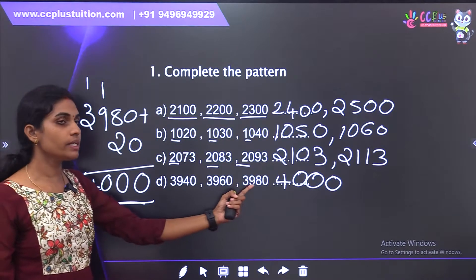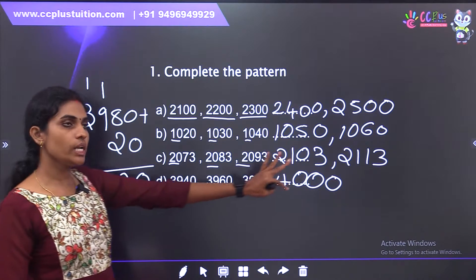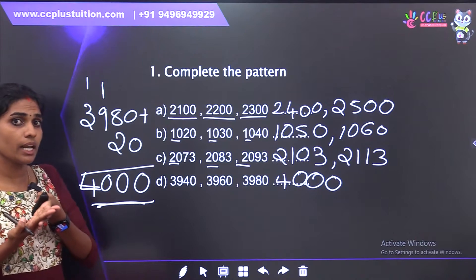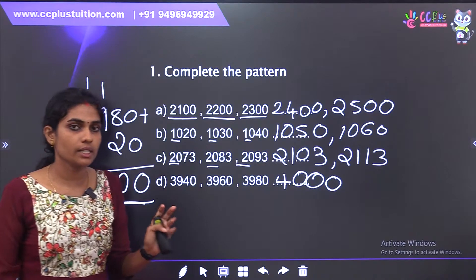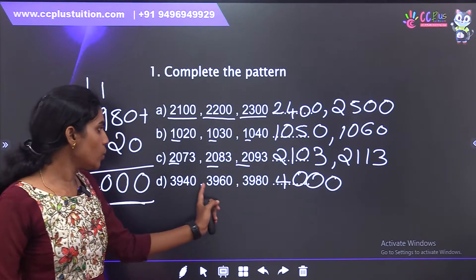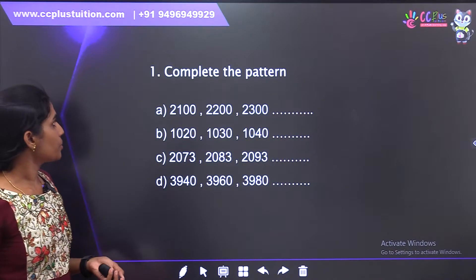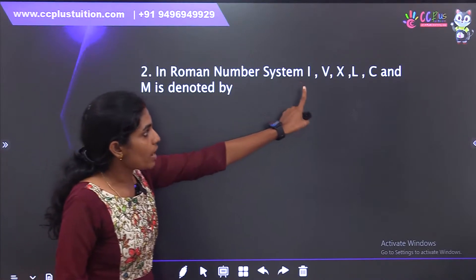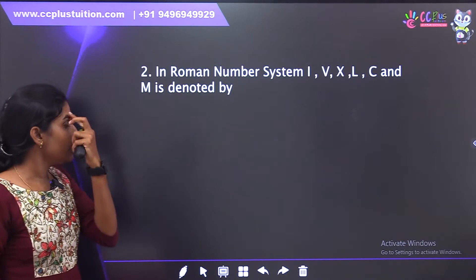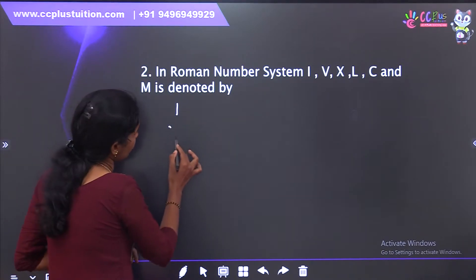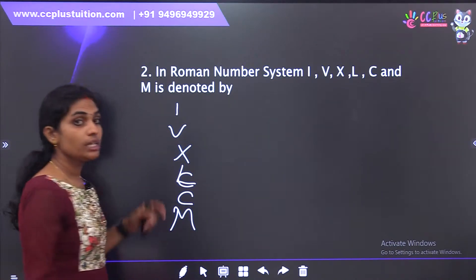If you look at the numbers, you will check if you have the numbers. We have to check the numbers. You can assign any number in 4 classes, sign it in the 10th grade. In the Roman number system, 1, 5, 10, L, C, and M are denoted. In this chapter, the numbers are X, L, C, and M. You can learn Roman numbers.